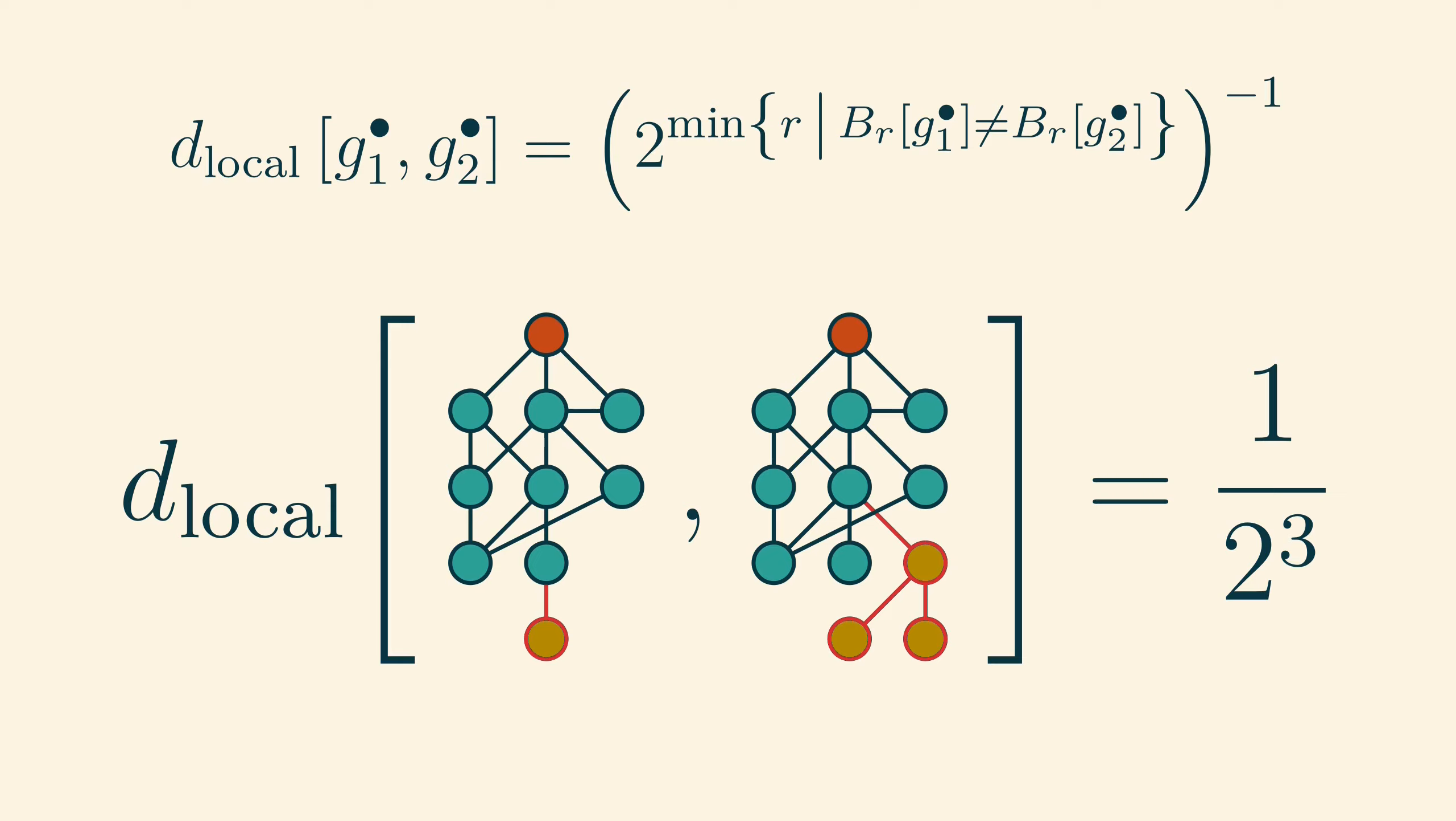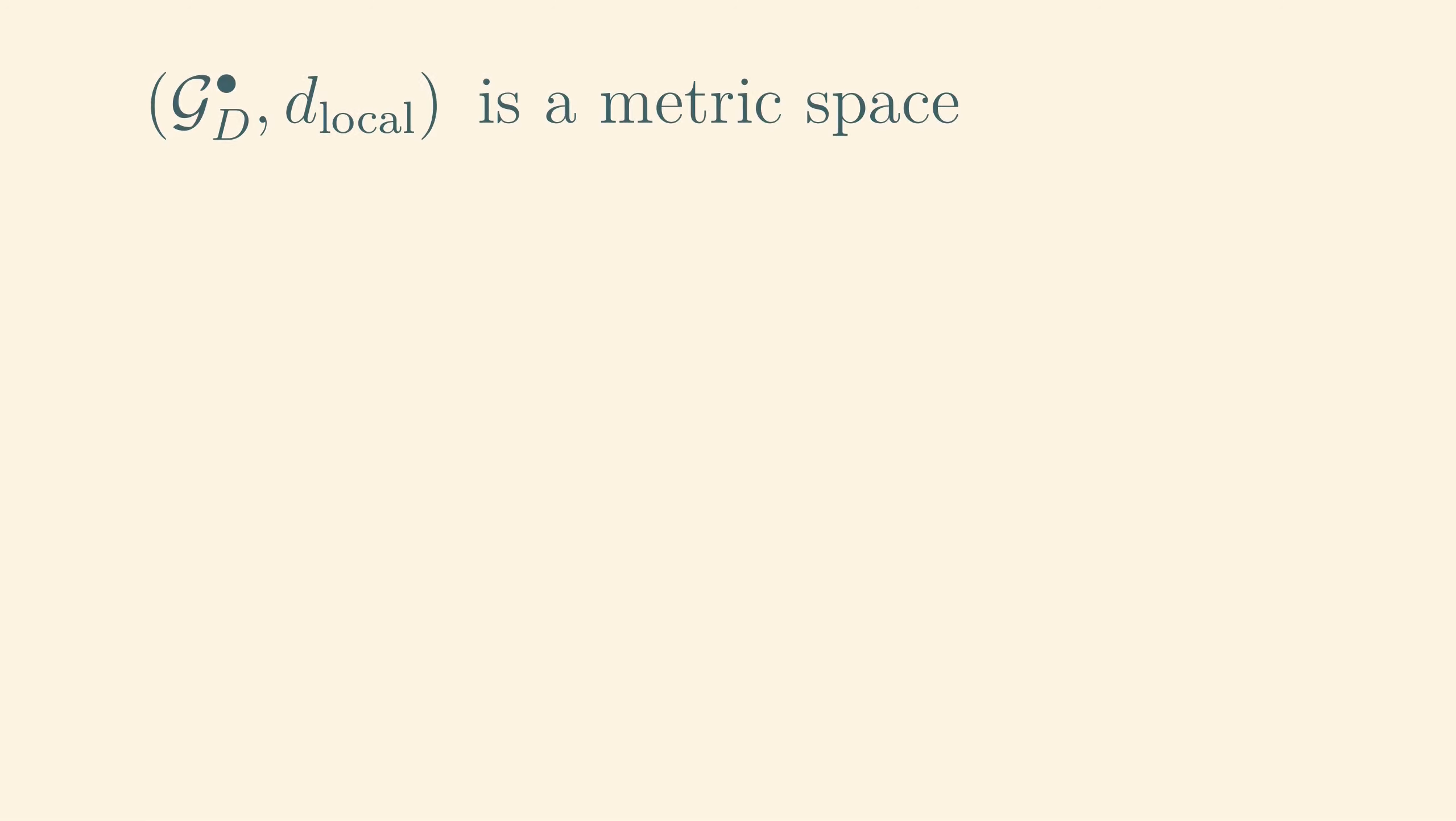Another way to think of this distance is to notice that it is a decreasing function of the number of steps one has to take away from the root in order to tell that two graphs are non-isomorphic. In other words, the further one has to look away from the root to notice the difference between two graphs, the closer the two graphs are in the local distance.